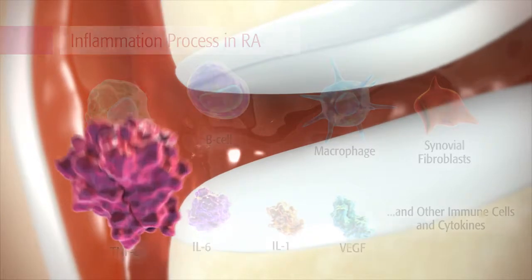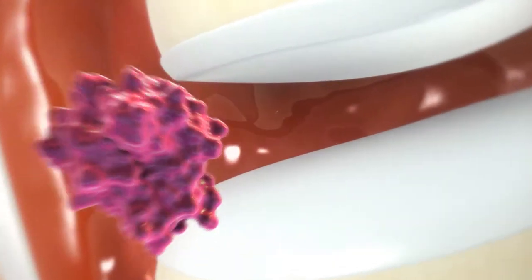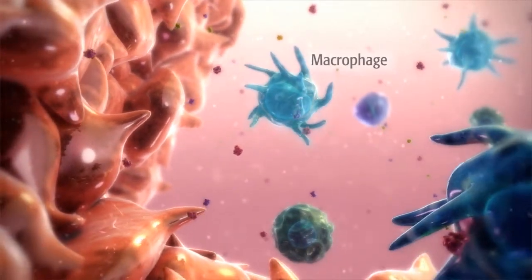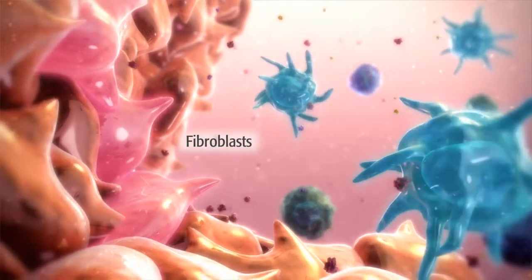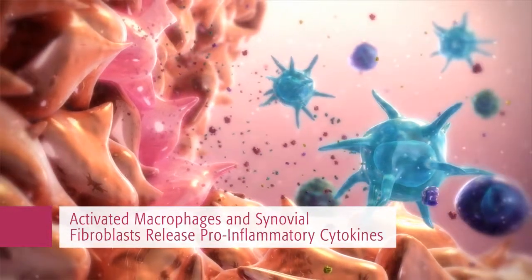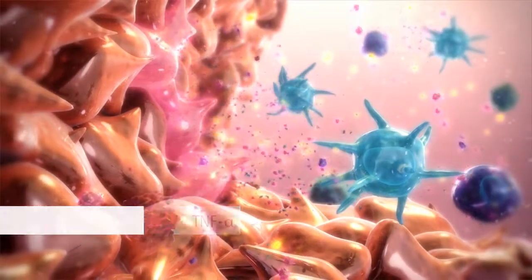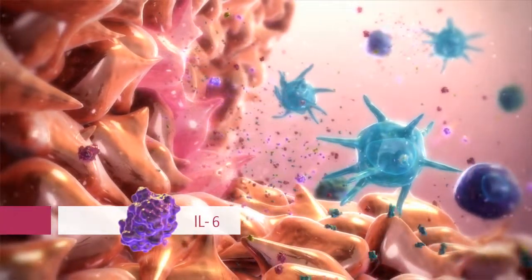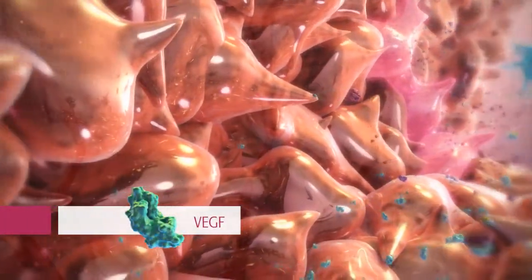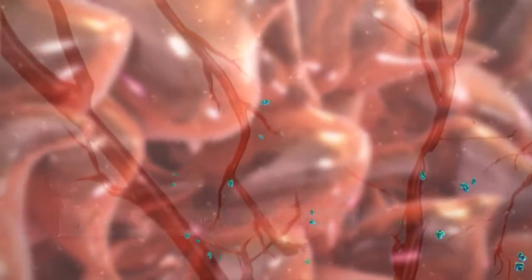As a key pro-inflammatory cytokine, TNF-alpha, along with other cytokines, activates immune cells including macrophages, as well as other cells such as synovial fibroblasts. In a key step, activated macrophages and synovial fibroblasts release pro-inflammatory cytokines including TNF-alpha, IL-1, and IL-6, and mediators of vascular growth including VEGF. VEGF is essential to the process of blood vessel proliferation, or angiogenesis.